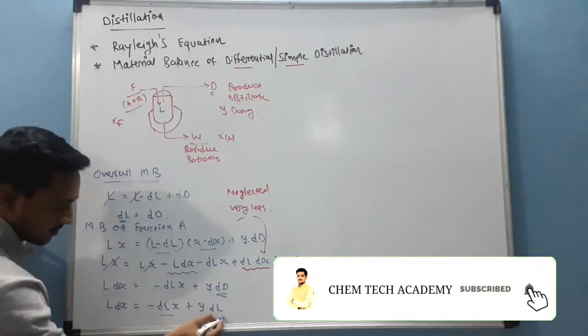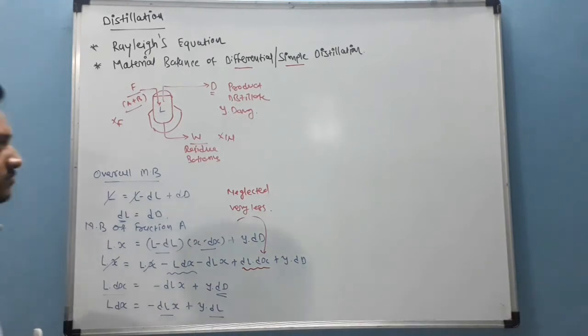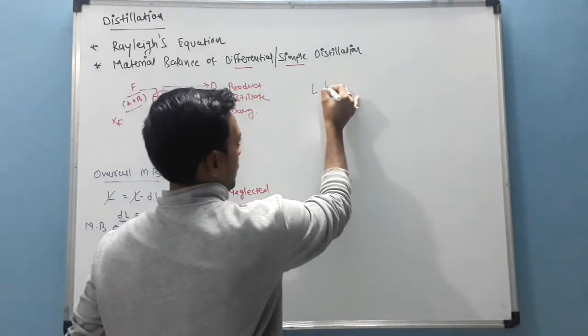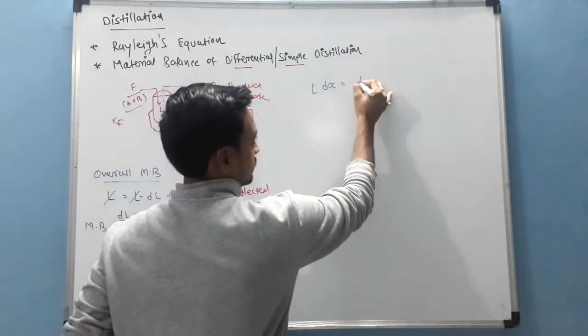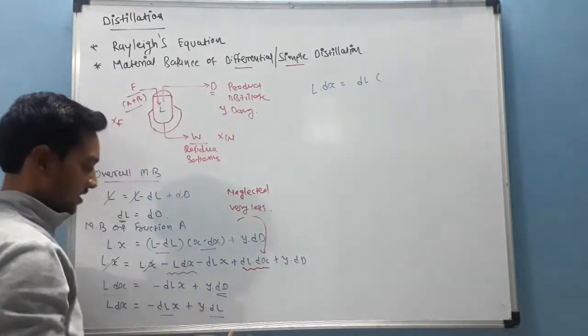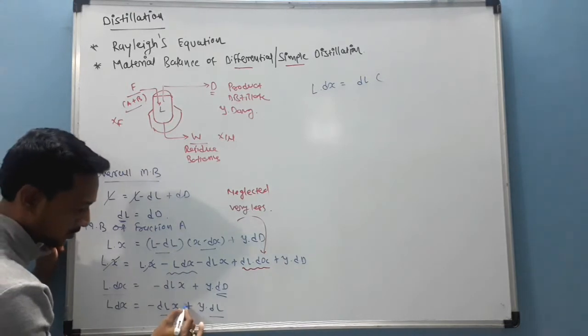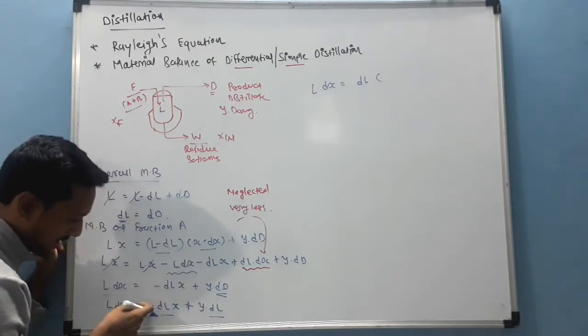LDX is equal to minus DLX plus YDL. So DL is common. LDX is equal to DL common. First I will write Y because it's positive, Y minus X.